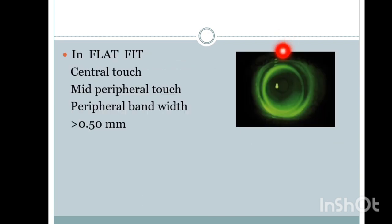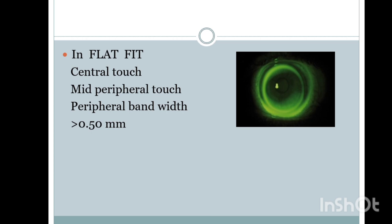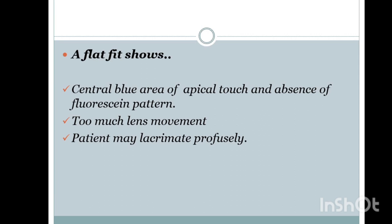In flat fit, there is a central touch — the central portion appears black because the fluorescent dye has not reached it. There is also a mid-peripheral touch. The peripheral bandwidth is higher — greater than 0.5 mm. The central part has a touch and the periphery shows pooling. Flat fit shows a central blue area of apical touch and absence of fluorescent pattern, too much lens movement with blinking, and the patient may lacrimat profusely.